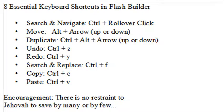The first one is used to search and navigate, and that's the Control plus rollover click. The next one is to move code around, and that's Alt plus arrow up or arrow down. The next one is to duplicate — highlight some code, hold the Control and Alt key down simultaneously, and duplicate that code with the arrow key. Then Control Z to undo, Control Y to redo. To search and replace, use Control F. To copy, Control C, and to paste, Control V.